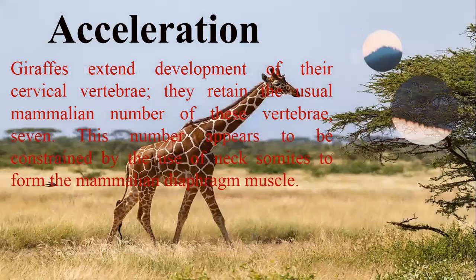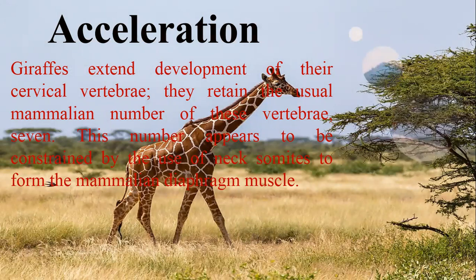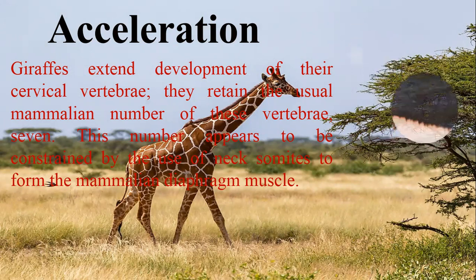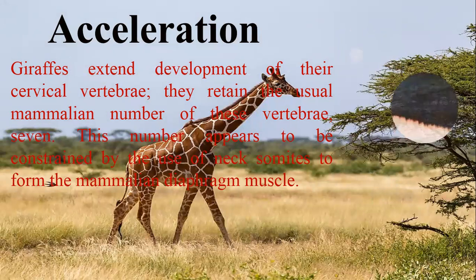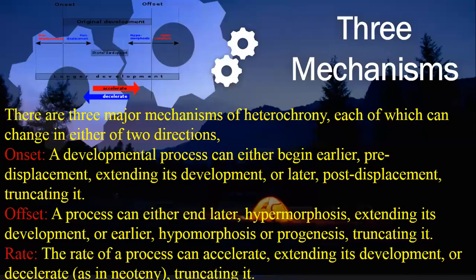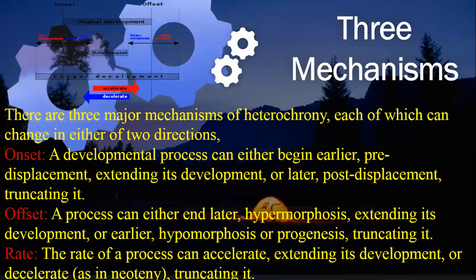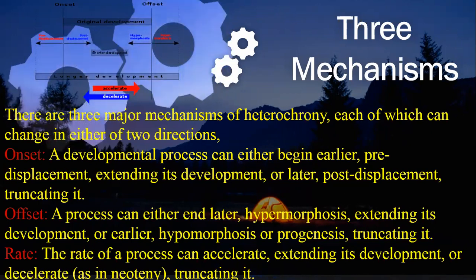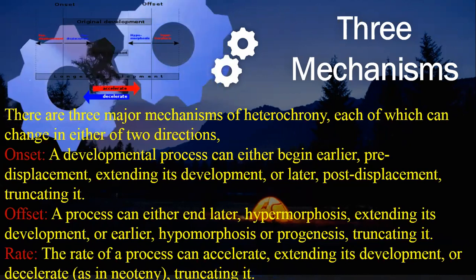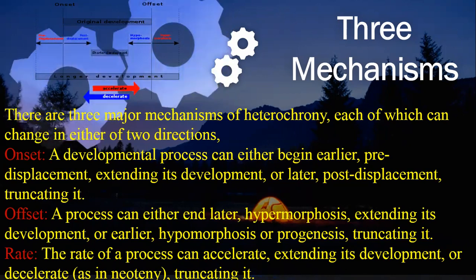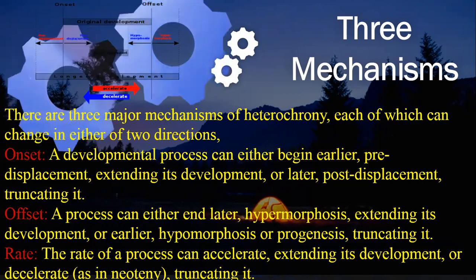Furthermore, another acceleration example involves extending development of the cervical vertebrae. Mammalian groups typically have seven cervical vertebrae, but acceleration can increase their size. This also involves using somites to form the mammalian diaphragm muscles from embryonic stages, accelerating by increasing size. There are three basic mechanisms: an onset process can either begin earlier — pre-displacement — or begin later — post-displacement.